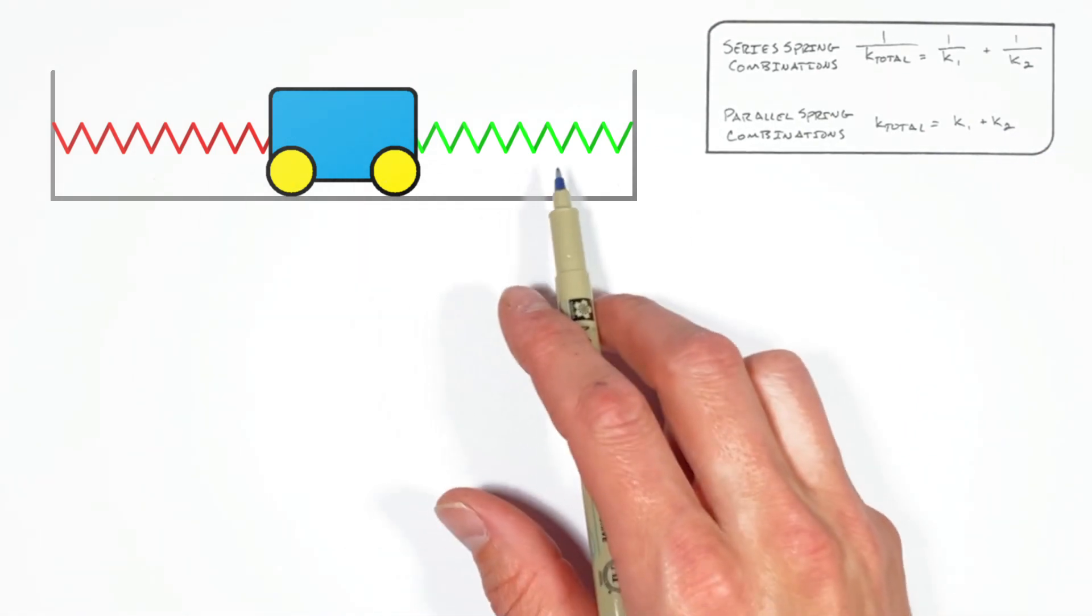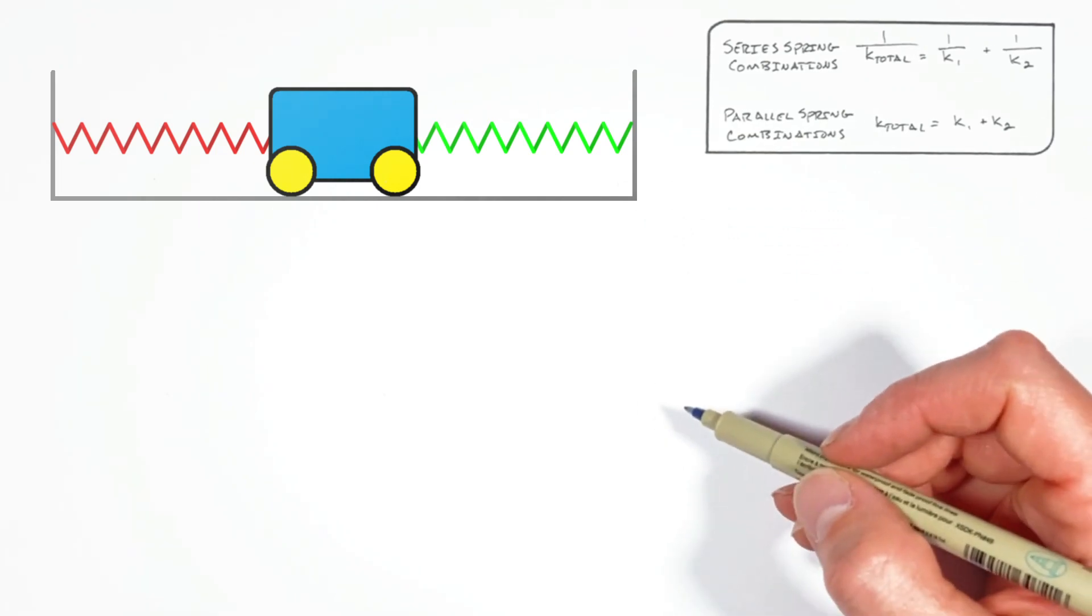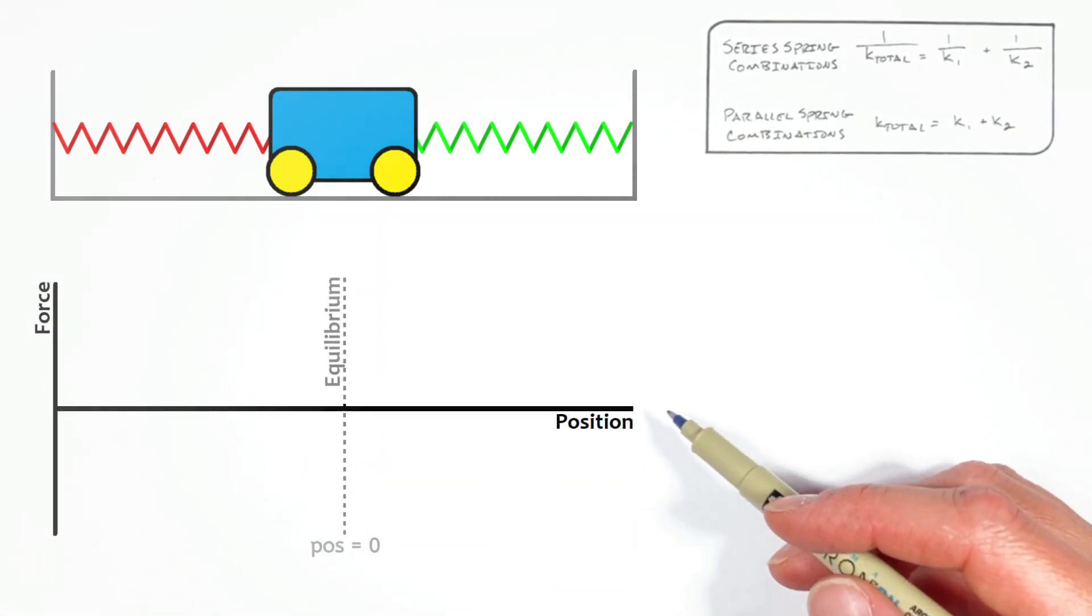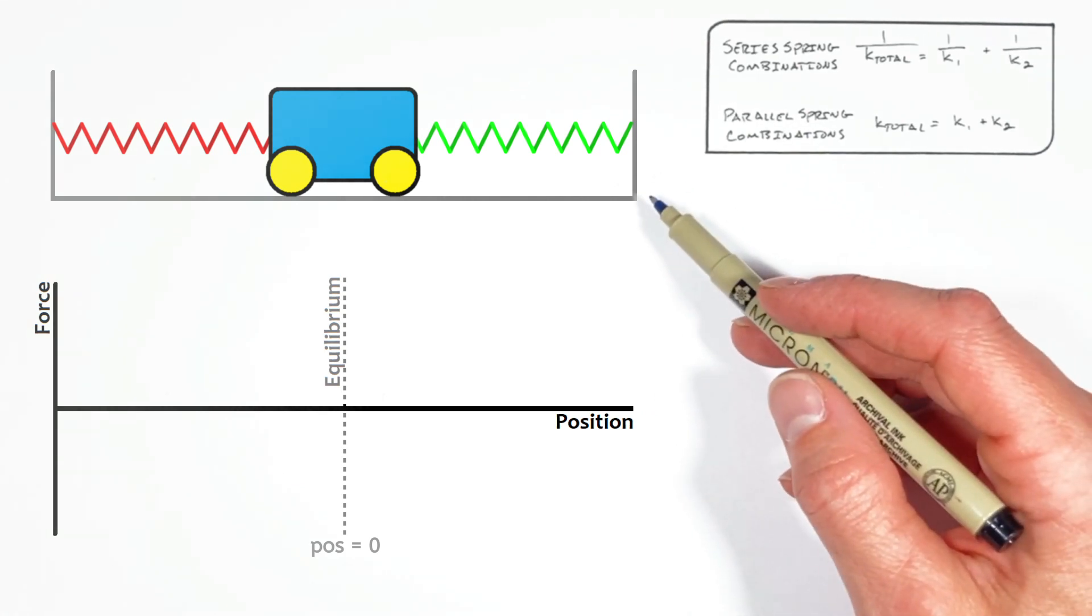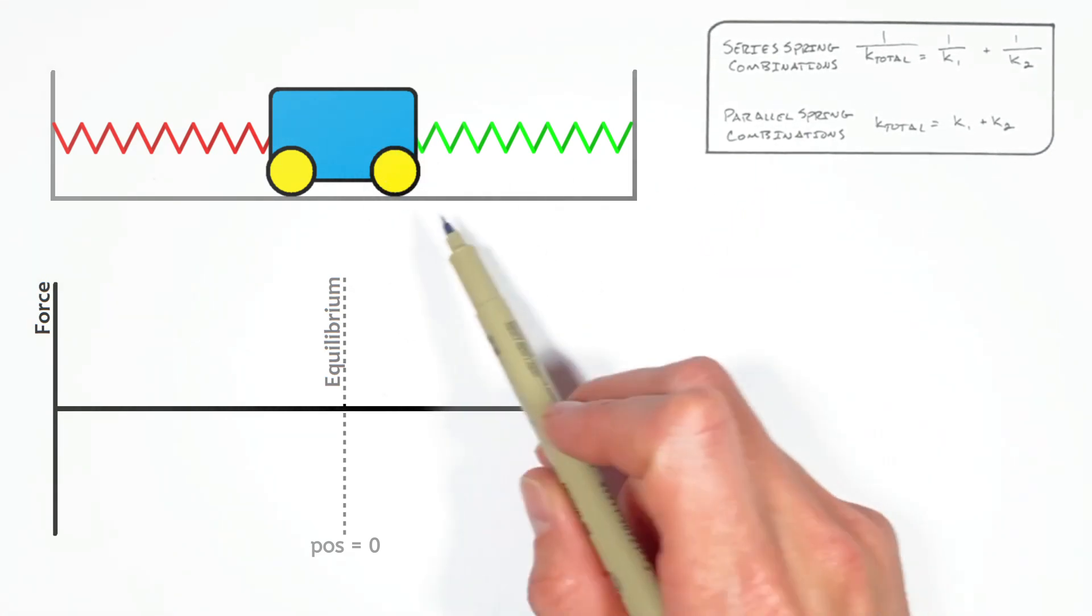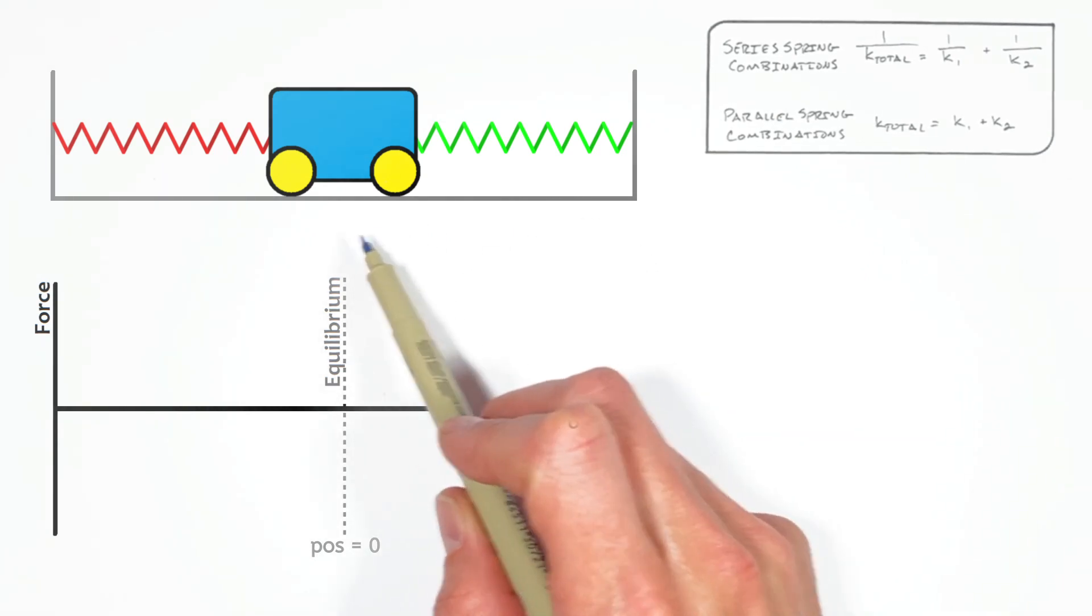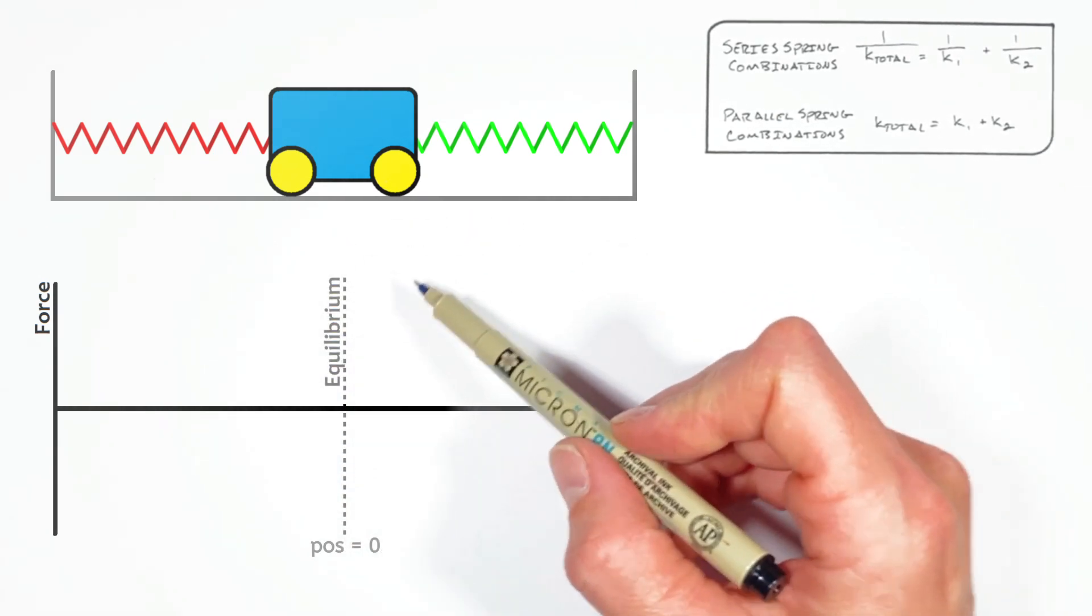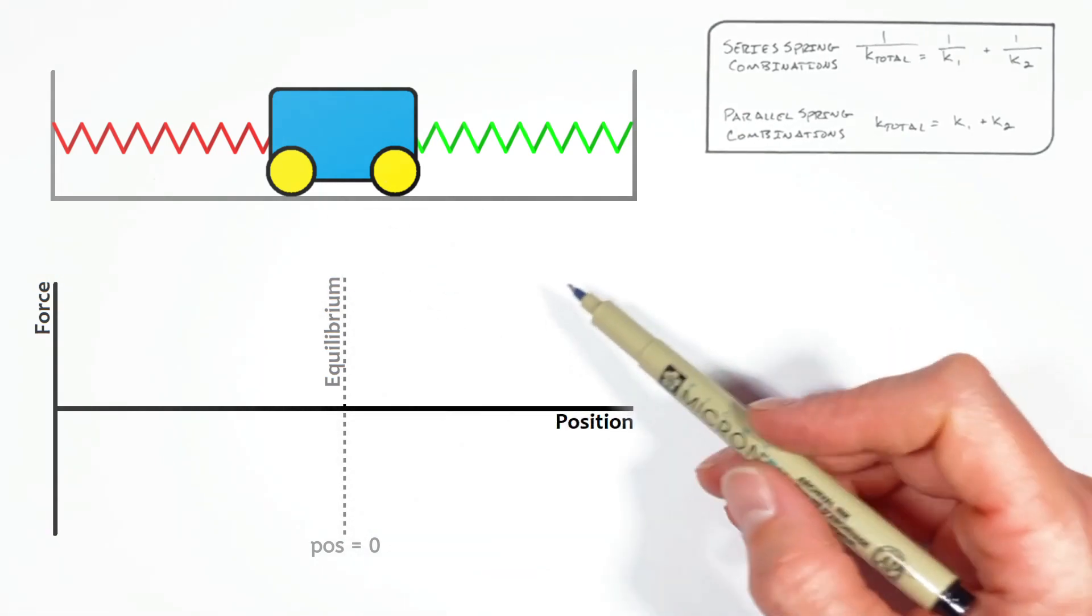Now, to understand why these two springs are in fact in parallel and not series, we need to take a look at a graph of the force versus position for each of these springs. You see, when this block is at equilibrium, one spring is pulling to the right, the other is pulling to the left.